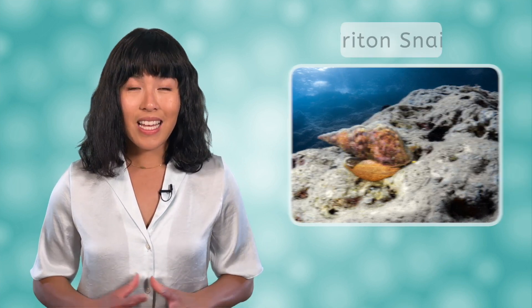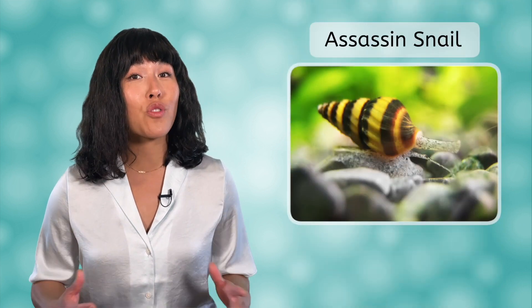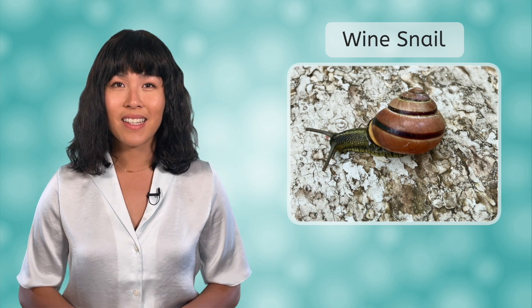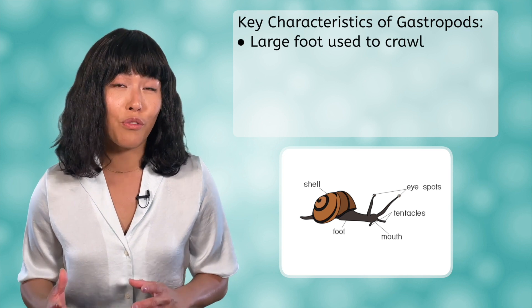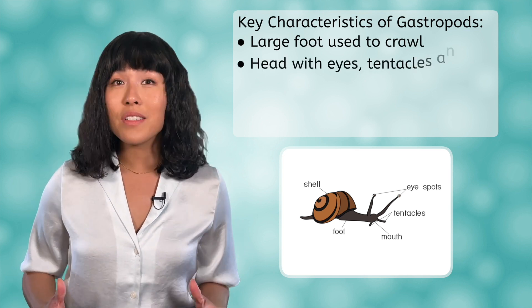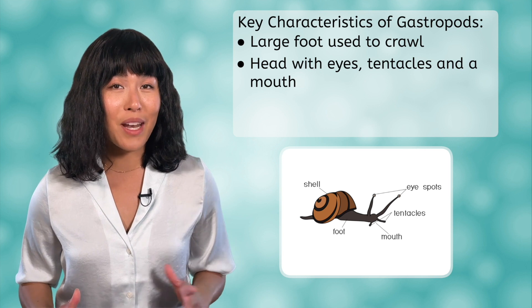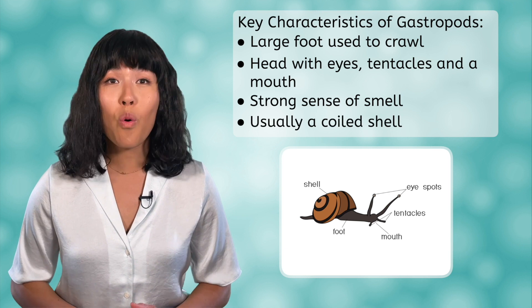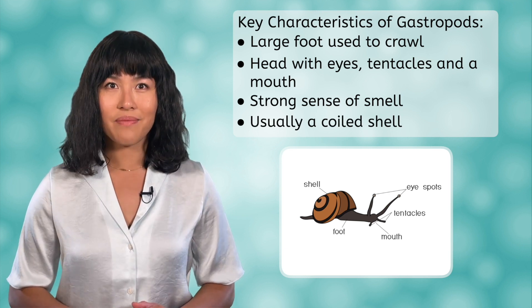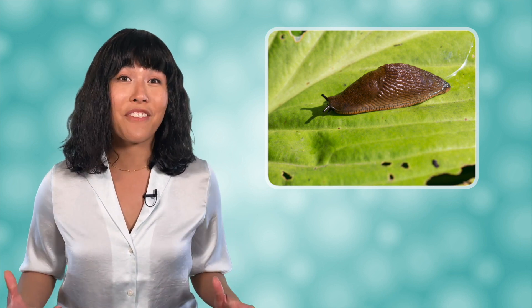Gastropods make up the most diverse class of invertebrates with over 60,000 species. They live in marine, freshwater, and terrestrial or land-based habitats. Key characteristics include using their large foot to crawl, a well-developed head with eyes, tentacles and a mouth, a strong sense of smell, and most — though not all — have a coiled or spiral shell. Fun fact: scientists believe that slugs evolved to lose their shell due to a lack of calcium in their terrestrial environment.